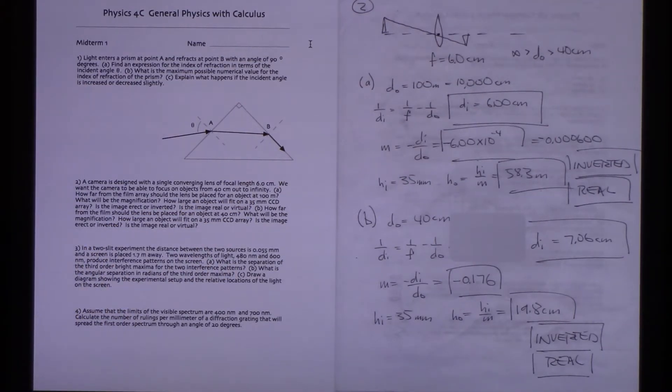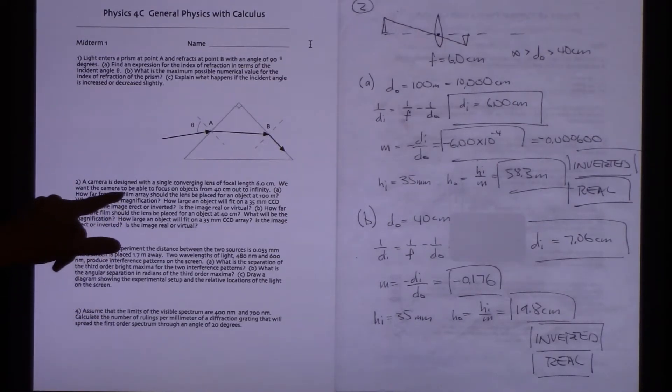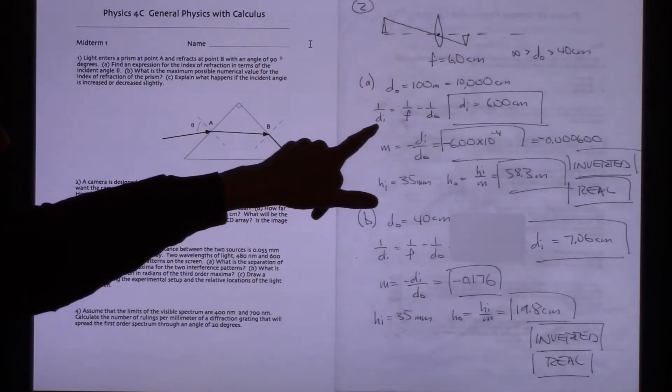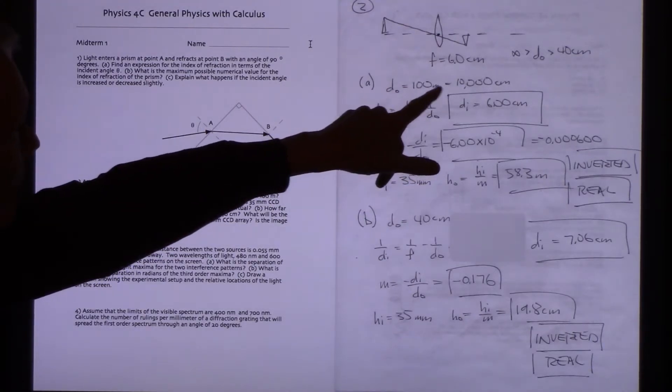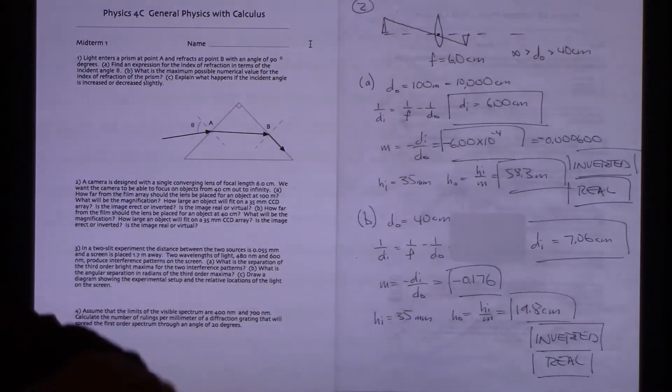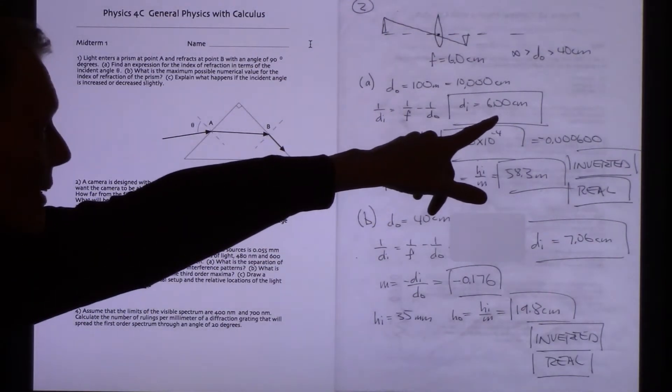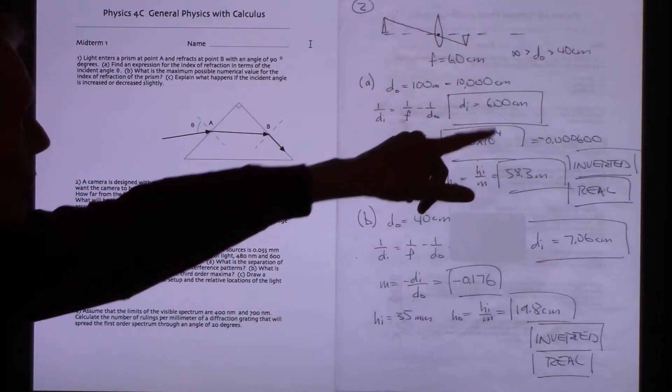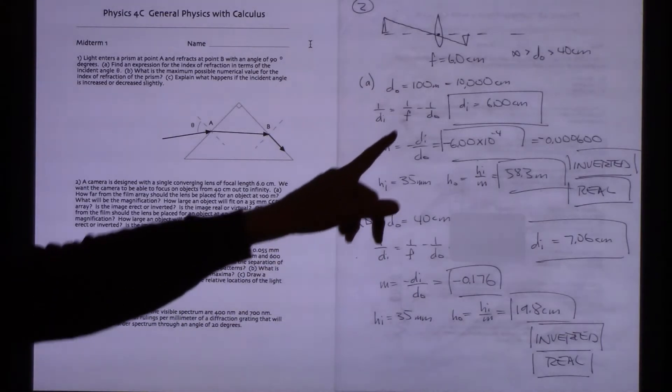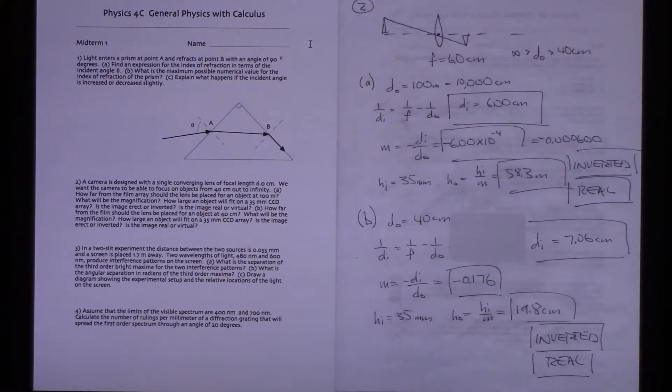Should the lens be placed for an object at 100 meters? 100 meters out is kind of the same thing as infinity. So the 100 meters is kind of that. And the film or the sensor array is going to be determined from DI. So if I'm at 100 meters, that's 10,000 centimeters, plugging these numbers in. To three significant figures, DI is going to be 6.00 centimeters. In this case, it's as if the object is infinitely far away. The image will show up at the focal length. So DI matches the focal length in this example.